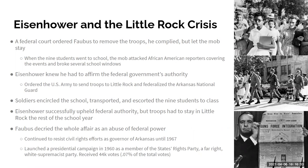This is the environment the civil rights movement was operating in. It wasn't just fringe people opposing African-American rights — these were people in high positions of power, resisting, sending troops to block children from going to school. Faubus kept getting re-elected as governor. These were not fringe beliefs; they were held by people with real political power.